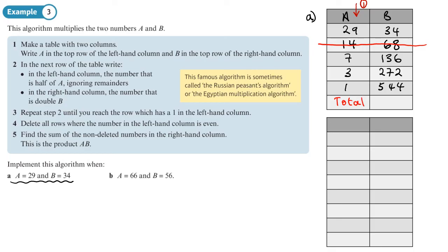Adding the non-deleted numbers: 34 plus 136 plus 272 plus 544 gives 986. So we can state that 29 times 34 equals 986.